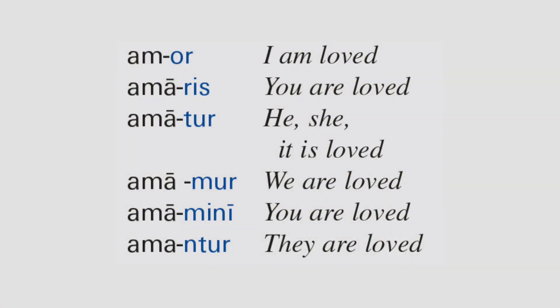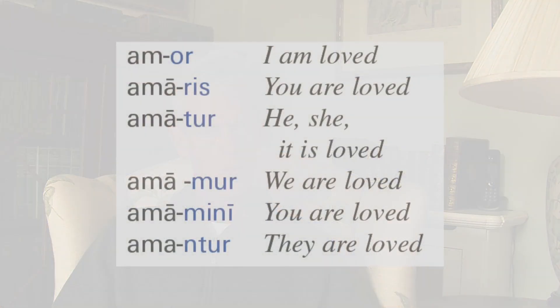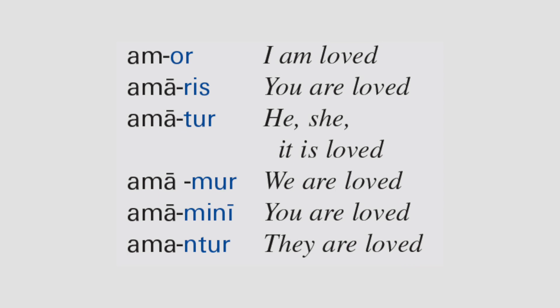Let's have a look at how that works with the present tense of amo. The present tense passive of amo is: amor, amaris, amatur,amamur, amamini, amantur. If you look carefully, you'll see that O, S, T, mus, tis, unt on the end of the present tense has become OR, RIS, TUR, MUR, MINI, UNTUR.